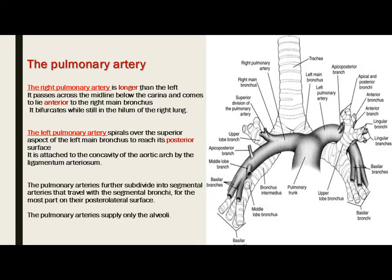The left pulmonary artery is attached to the concavity of the aortic arch by the ligamentum arteriosum. The pulmonary arteries further subdivide into segmental arteries that travel with the segmental bronchi, for the most part on their posterolateral surface. The pulmonary arteries supply only the alveoli.